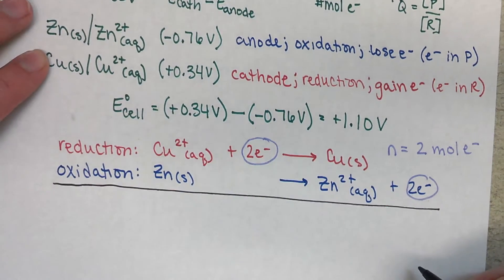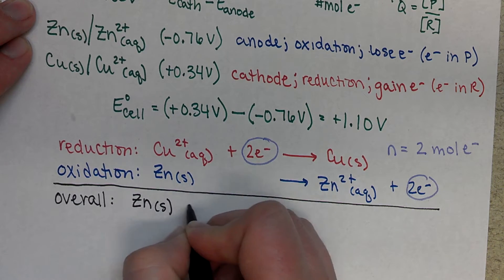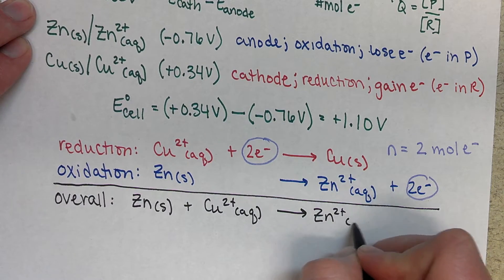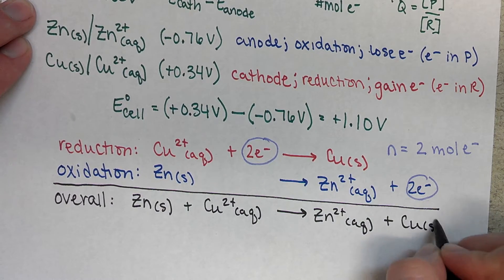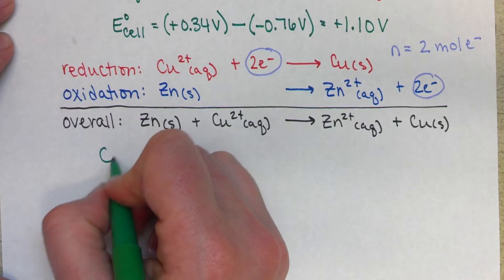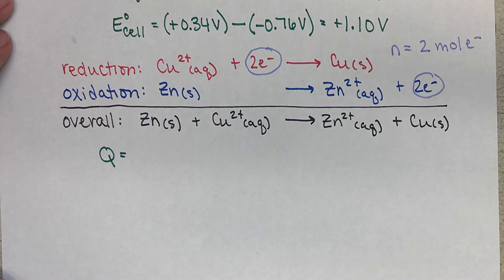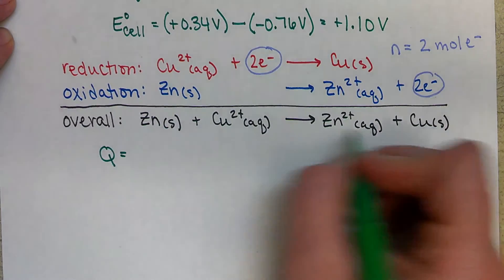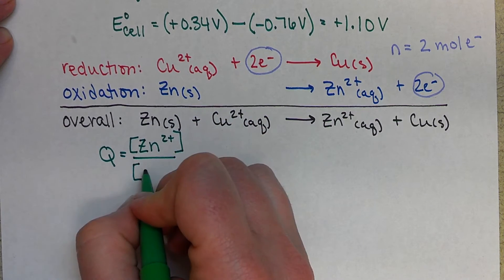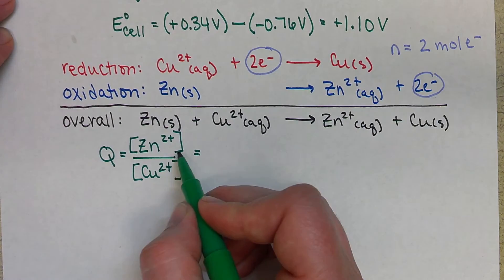Then the next thing we need to solve for is our Q, which means we need an overall equation. And we have zinc solid plus copper two plus ion aqueous going to zinc two plus aqueous and copper solid. Now we can set up our expression for Q. We have our products over our reactants. Remember aqueous and gases are included. Solids and liquids are not. So we have our products zinc ion over our reactants, so zinc two plus divided by copper two plus. And in the question that's been given to us, we know that our concentration of zinc ion is two molar.